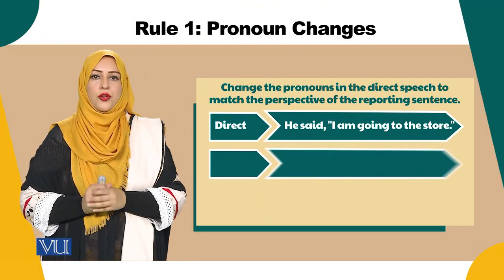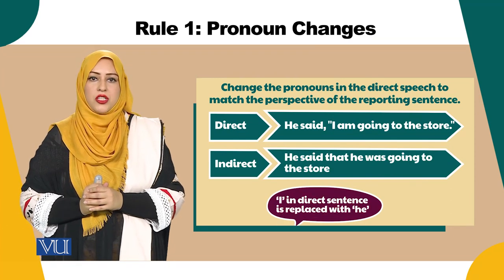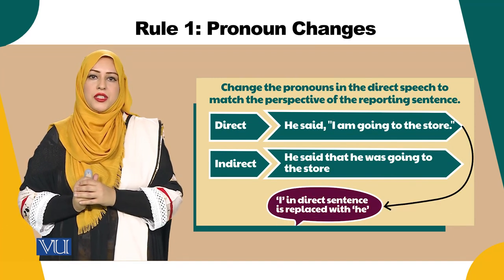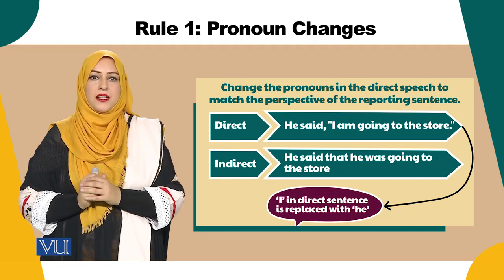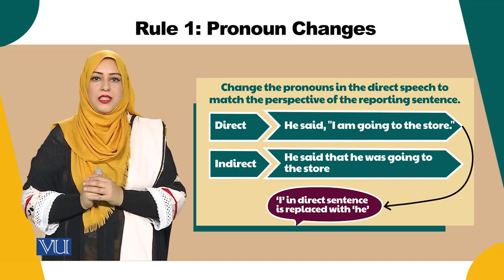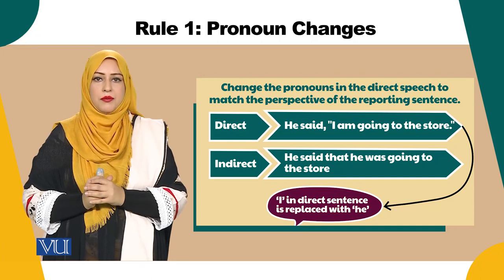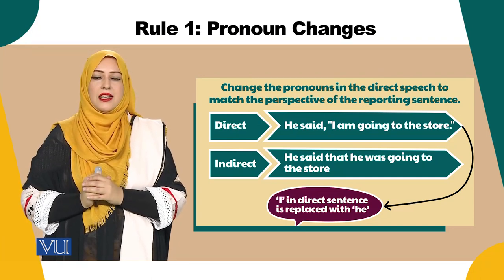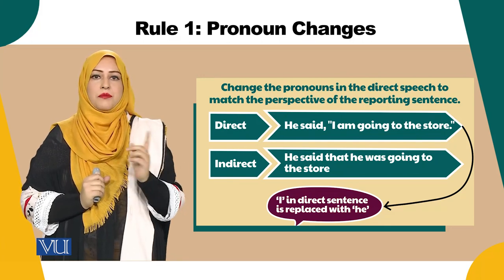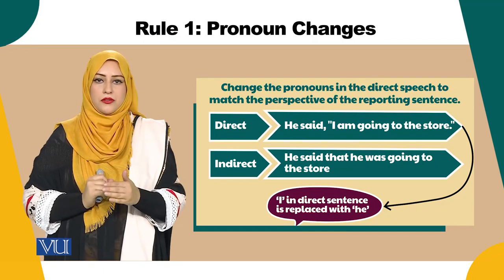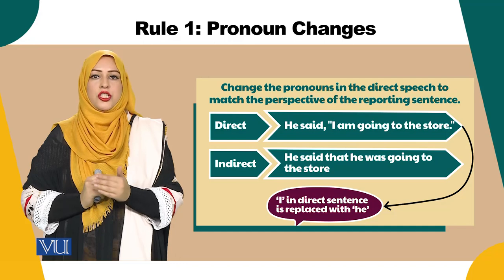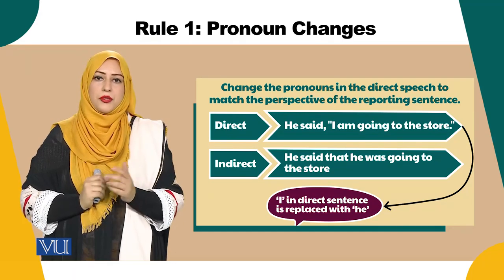Let's start with the first rule of conversion: pronoun change. When you are changing a direct speech into indirect speech, you need to change the pronouns. For example, the direct speech 'He said to me, I'm going to the store' becomes in indirect speech 'He said to me that he was going to the store.' As you can see, 'I' has been replaced with 'he.' So whenever you convert direct speech into indirect speech, you always have to change the pronouns.